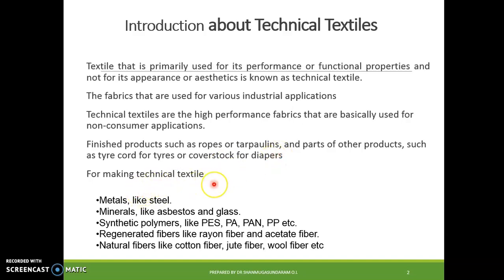For making technical textiles, you need either metals like steel or minerals like asbestos or glass — these are all high performance fibers. Synthetic polymers like PES, PA, PAN, and polypropylene are required for the manufacturing of technical textiles. Regenerated fibers like rayon and acetate, as well as natural fibers like cotton, jute, and wool are also used.